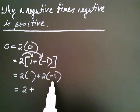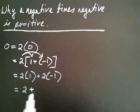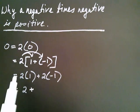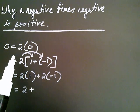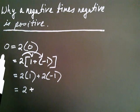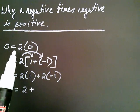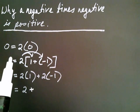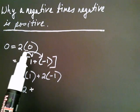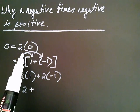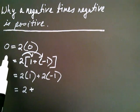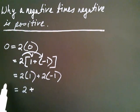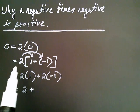Before you answer that, notice that in the very beginning, all of these are equal to zero — because the original one was equal to zero. So the zero hasn't changed on the left-hand side.